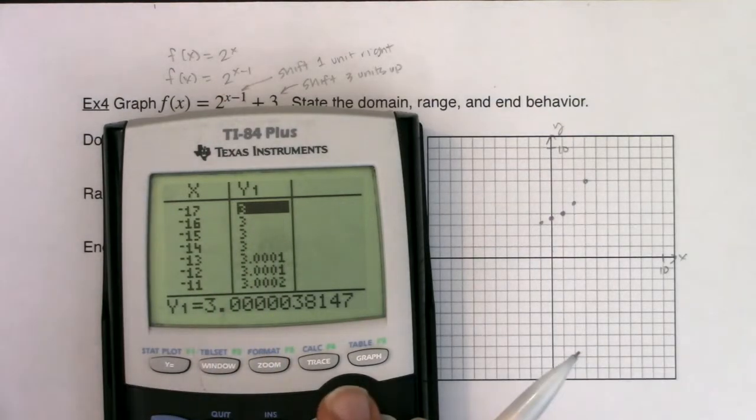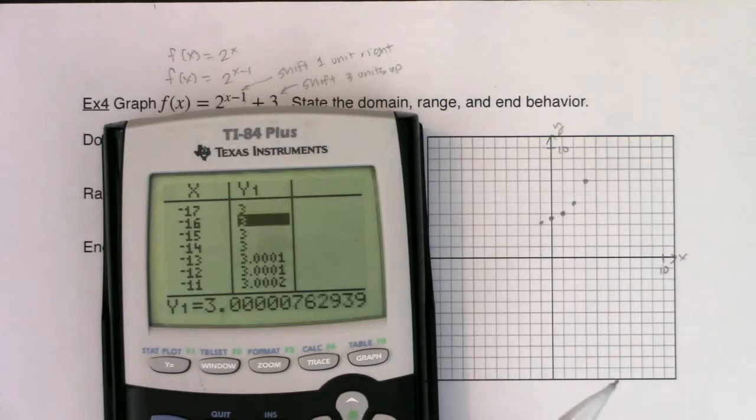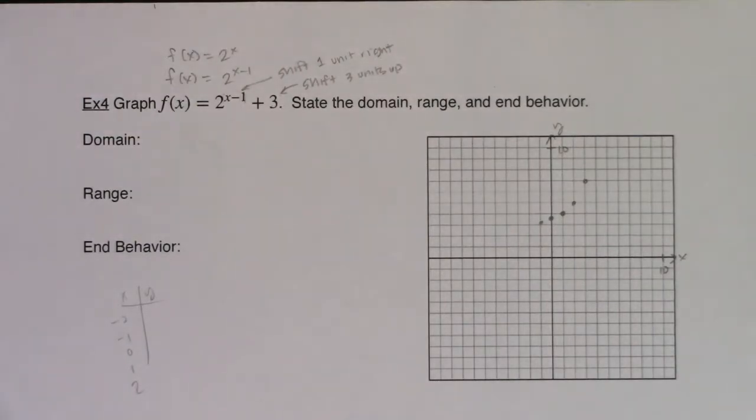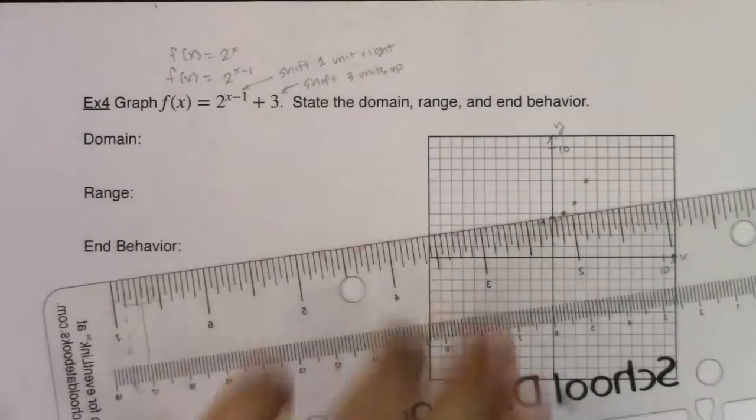Like the decimal was 3.000038147 and your calculator can't put all of those decimals in that view. So, it hasn't actually hit 3. It is an asymptote that we won't cross, but your calculator just struggles in showing that. Alright, so let me go get all of this graphed in and let's rattle off some traits.